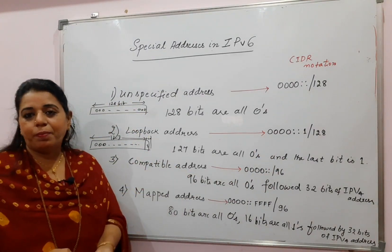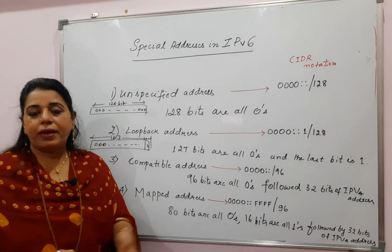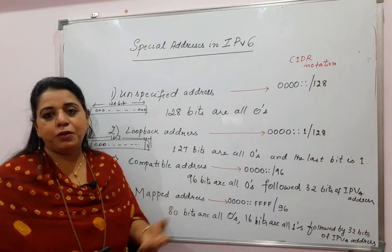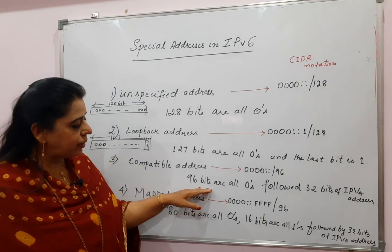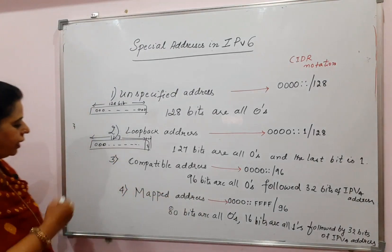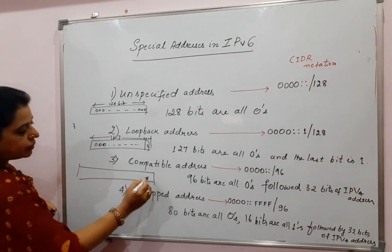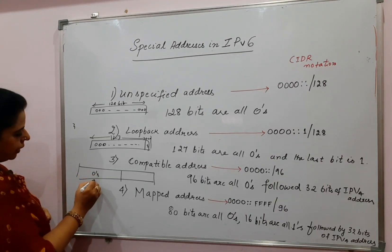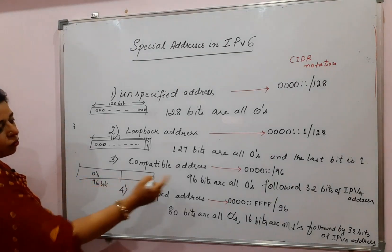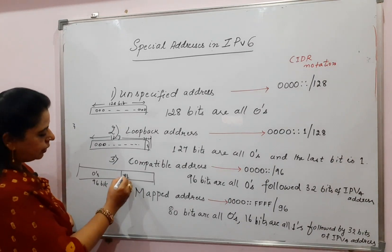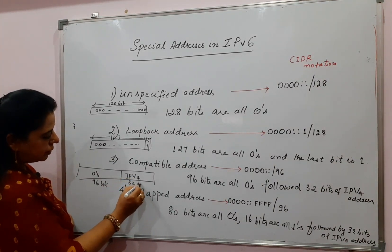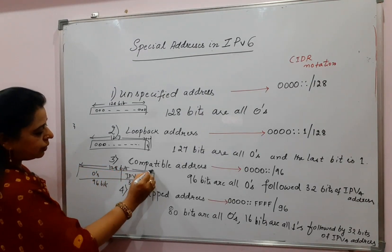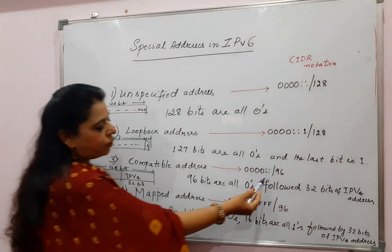The third one in the list is the compatible address. The compatible address is used when a machine using IPv6 wants to send a message to another machine using IPv6. The address consists of 128 bits: 96 bits are all zeros, followed by 32 bits of an IPv4 address. So 96 plus 32 gives you 128 bits in total. The CIDR notation is written as shown here.